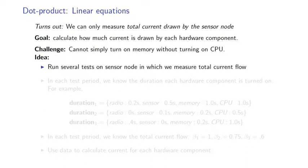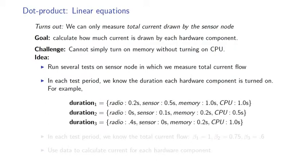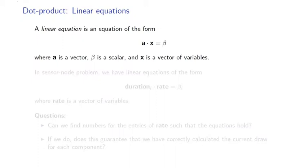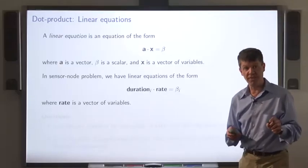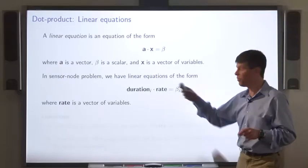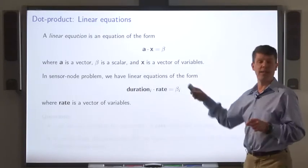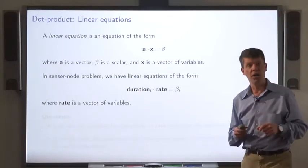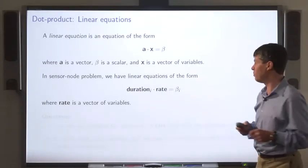We run several tests on the sensor node. And in each test we have an idea of how long each component is on during the test, and we measure the total amount of current flow during that test. Now we can set up an equation, a linear equation, for each test period that says that the dot product of the duration vector for that test period with the rate of consumption is some specified amount, the total draw of energy during the test period.